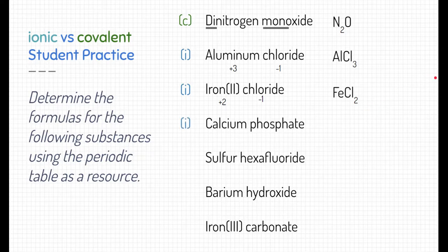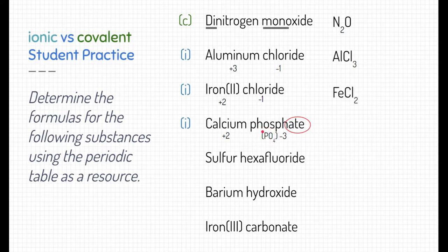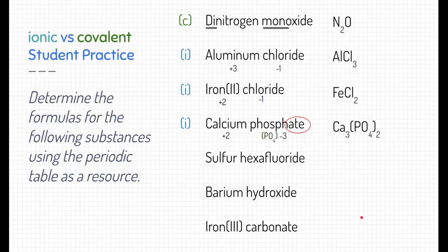The next example is calcium phosphate — an ionic compound. Calcium is a metal, and phosphate is a polyatomic ion. A hint is that it ends in -ate, and you can find the name phosphate in the list of polyatomic ions. Phosphate is PO4, and that entire group has a charge of minus three. Calcium has a charge of plus two. So the ratio is three calciums — giving positive six — and two whole phosphates — giving negative six — which cancel each other out: Ca3(PO4)2.